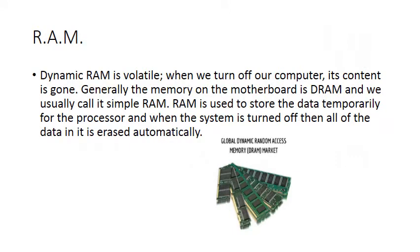Then you have the other type of RAM, which is DRAM, dynamic RAM. This type of RAM is volatile; when you turn off the computer, its contents are gone. Generally, the memory on the motherboard is DRAM, and we usually call it simple RAM. RAM is used to store data temporarily for the processor, and when the system is turned off, all the data in it is erased automatically.